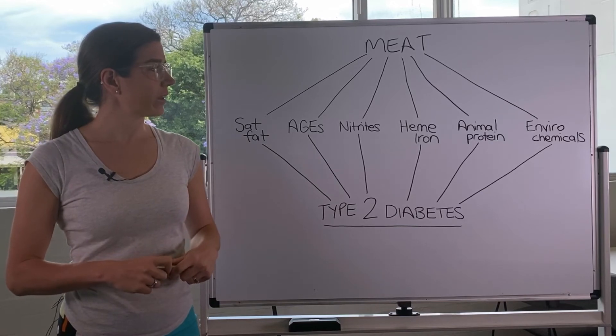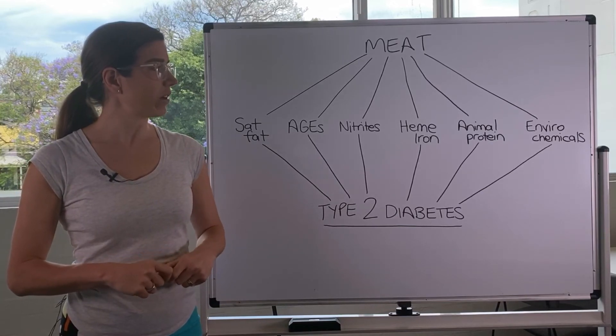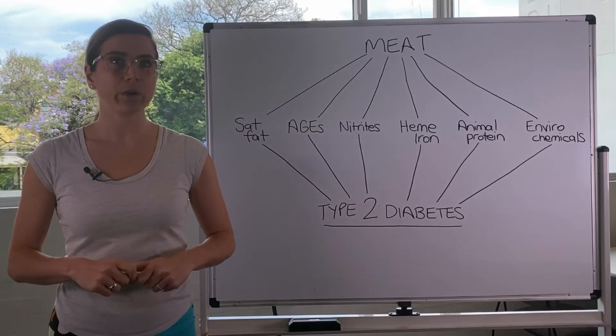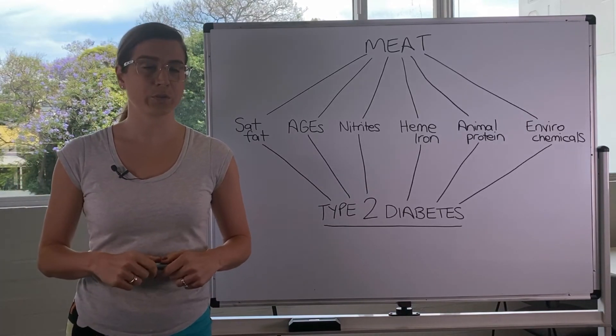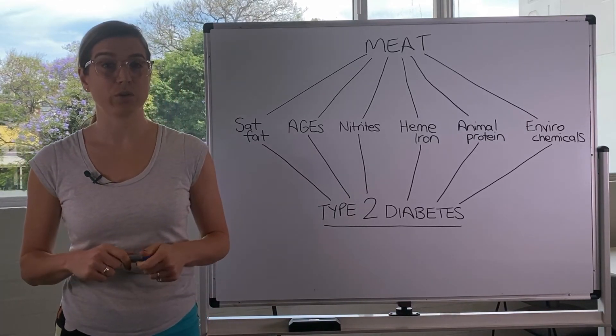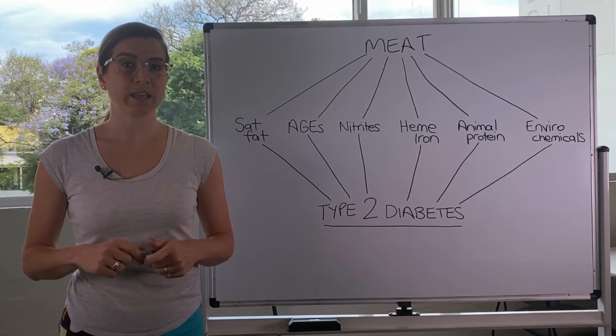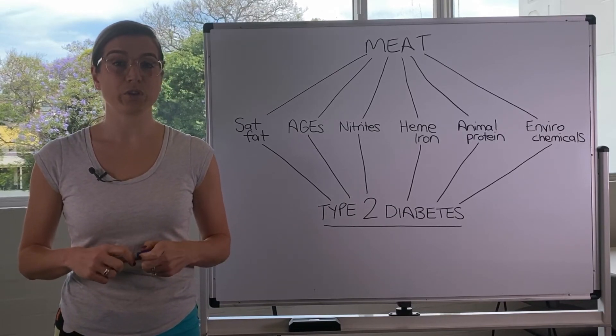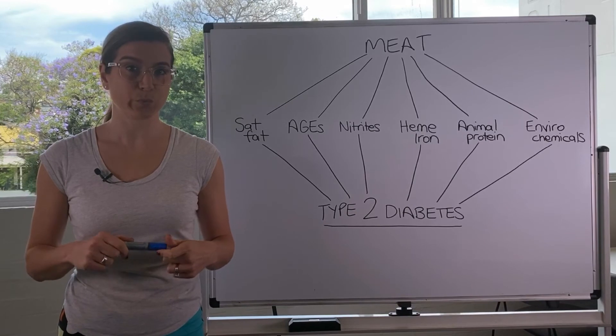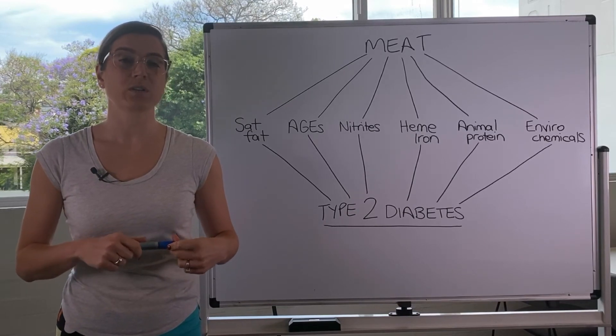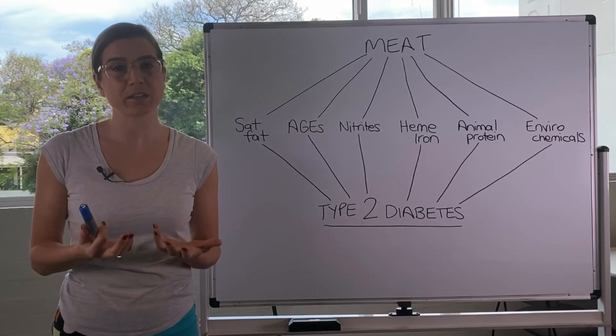Then last is environmental chemicals. So these are industrial chemicals that get into meat. And these chemicals are also referred to as endocrine disruptors. That is because they can disrupt our endocrine system.